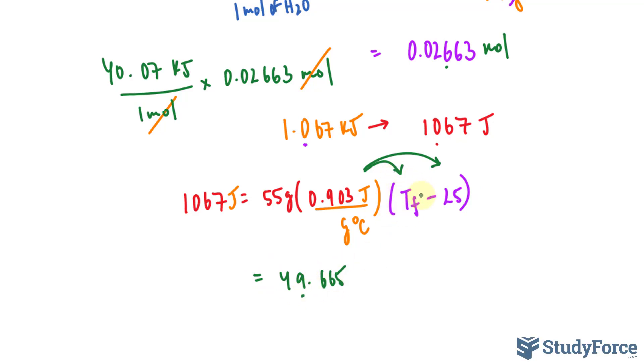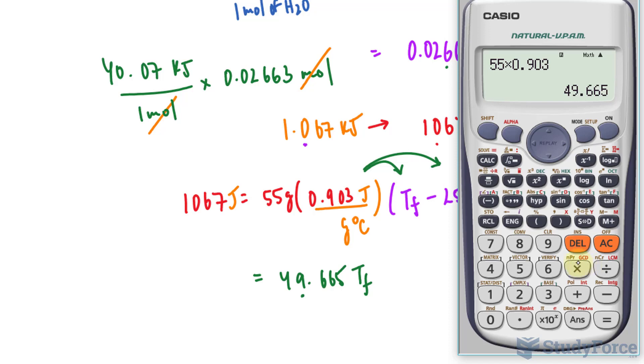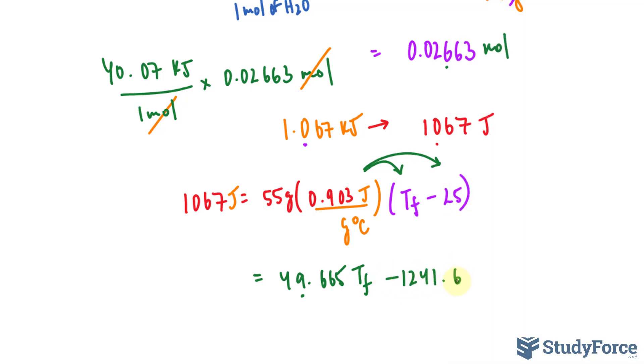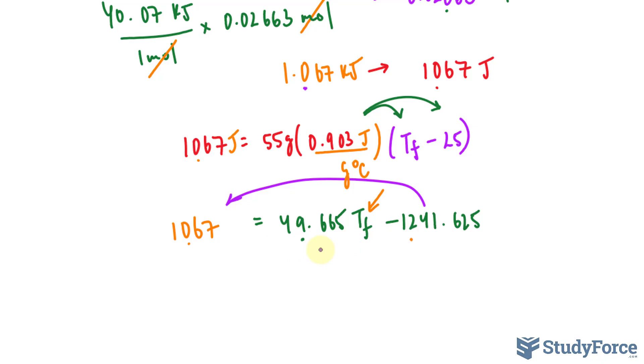This should be two significant figures so far, and it's being multiplied to these two terms: T sub f and negative 25, which gives us negative 1241.625. This also should be two significant figures. We need to solve for this variable. 1067 - moving this term over to this side makes it positive. And then we divide both sides by this factor. So your expression should look like 1067 plus 1241.625 divided by 49.665 gives us T sub f.